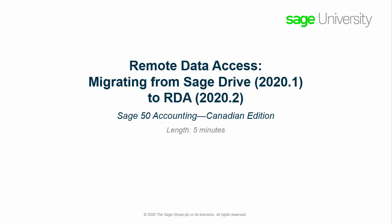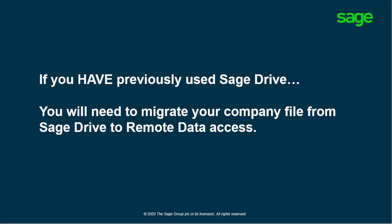Over the next few minutes we will show you how to migrate a shared company file from Sage Drive 2020.1 to Remote Data Access 2020.2. The steps in this video are for current Sage Drive users. If you have previously used Sage Drive in Sage 50 Cloud Accounting Canadian Edition 2020.1 or earlier, you will need to migrate your company file from Sage Drive to Remote Data Access.